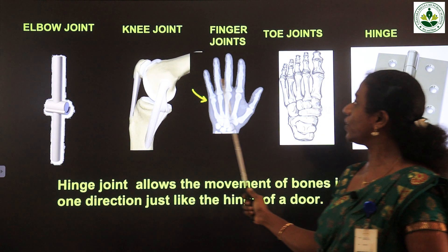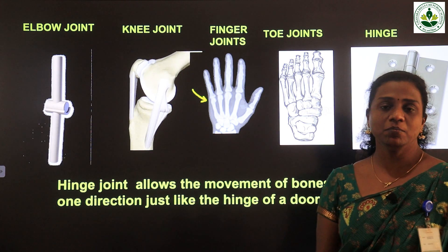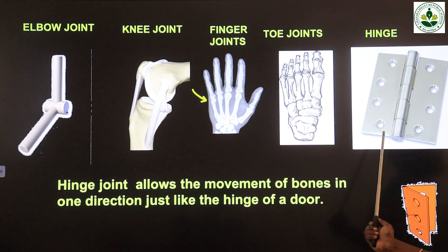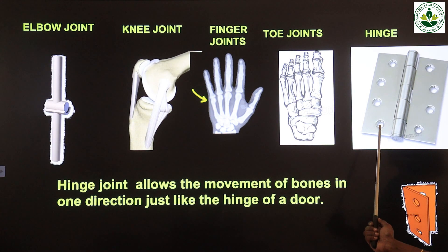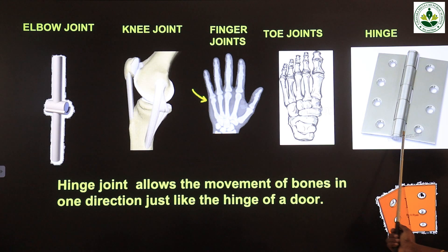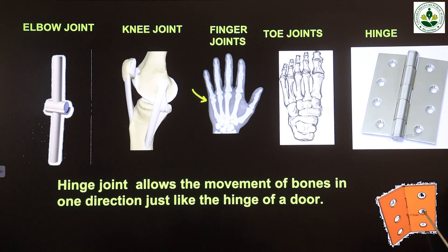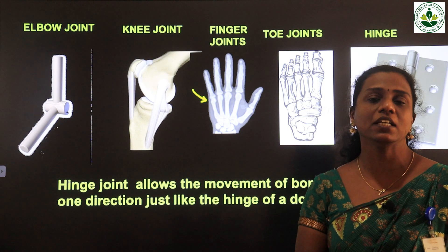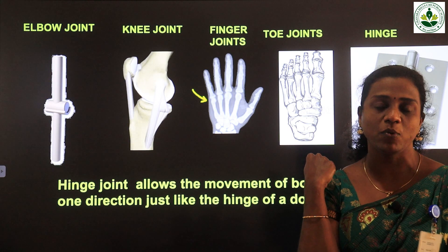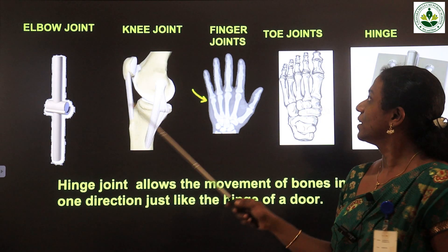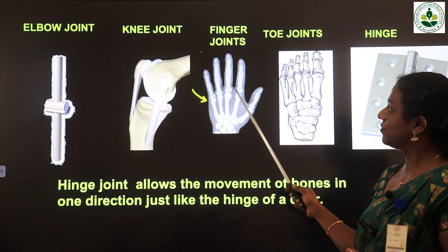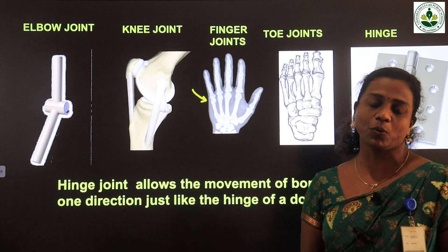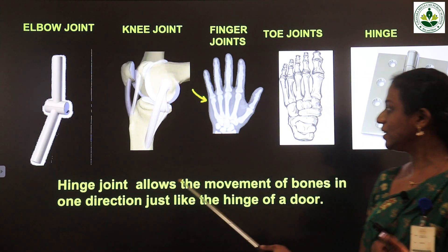The first type is hinge joint. Examples are mainly elbow joint, knee joint, finger joints, and toe joints. The name hinge joint implies the hinge that connects doors — it helps the door to open and close. In the same way, in our body, a hinge joint allows movement in only one direction. For example, our elbow can move only in one direction. The knee joint is the same kind. Finger joints and toe joints also move in one direction.